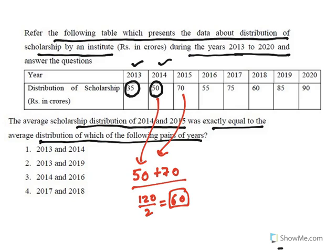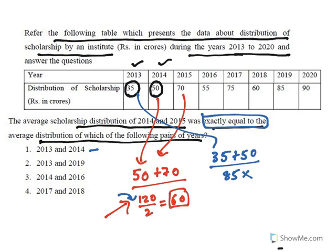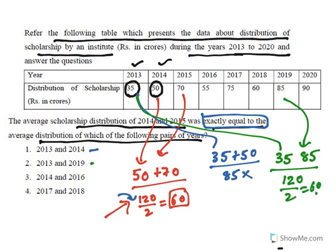We need to find which two years sum to 120 crores. For 2013 and 2014: 35 + 50 = 85 — not matching. For 2013 and 2019: 35 + 85 = 120, so the average is 60 crores, which is exactly equal to 2014 and 2015. So the answer is 2013 and 2019. Data interpretation questions are easy once you understand the data and what is being asked.